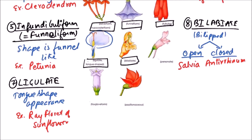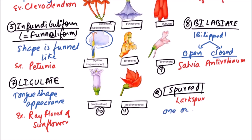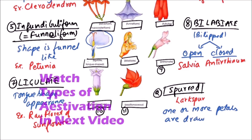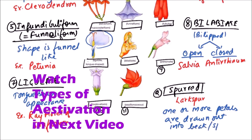Some other types are also there, like the personate type, foxglove form, and papilionaceous. Spur type is also found — for example, in Larkspur — in which one or more petals are drawn out into a beak or spur-like structure.